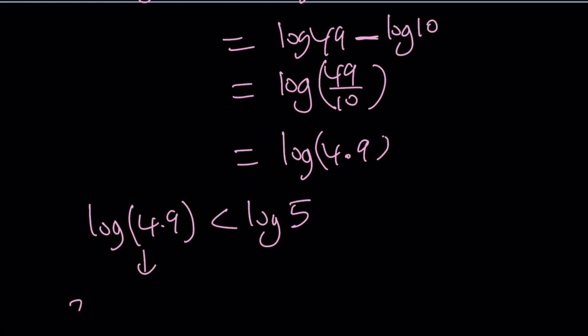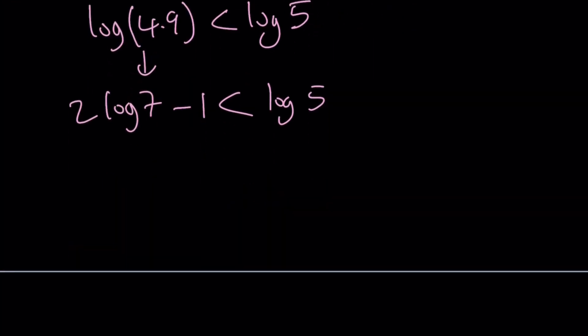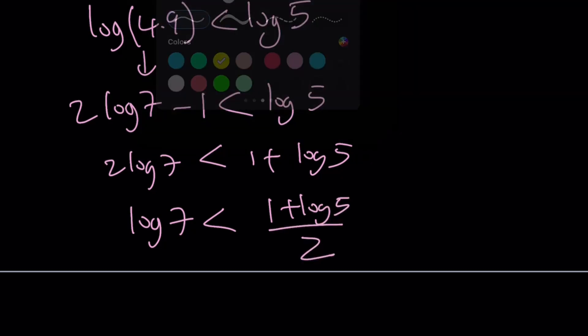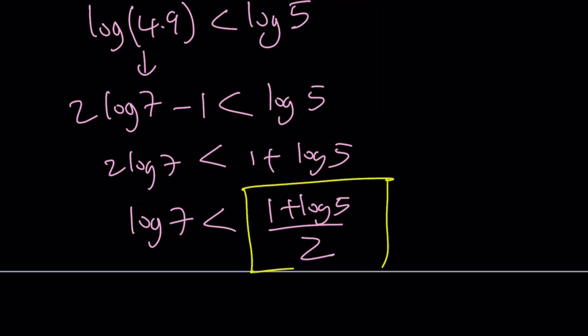So this was 2 log 7 minus 1, remember? And this is just log 5. Let's go ahead and add one to both sides. 2 log 7 is less than 1 plus log 5. Divide both sides by 2. And you're going to get log 7 is less than 1 plus log 5 divided by 2. And again, our larger number is 1 plus log 5 divided by 2.